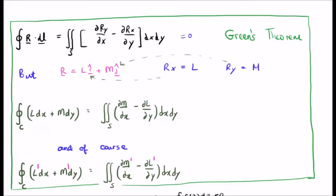In our previous nomenclature, r is equal to l i hat plus m j hat. Or r sub x is equal to l and r sub y is equal to m.